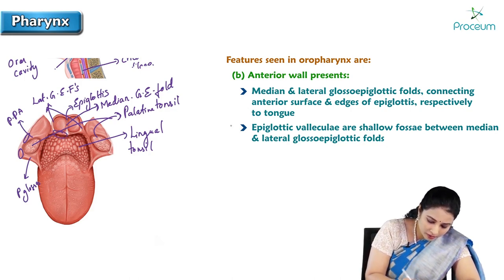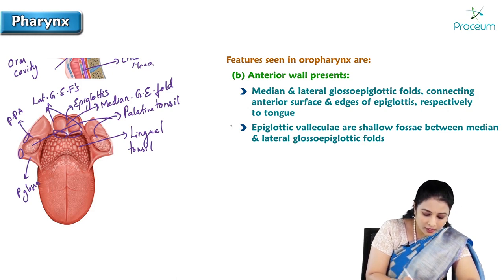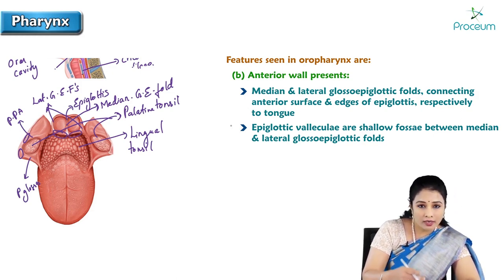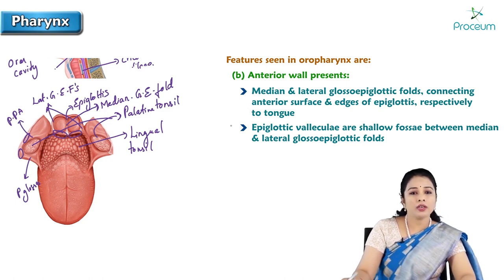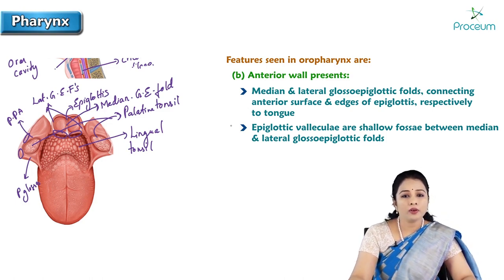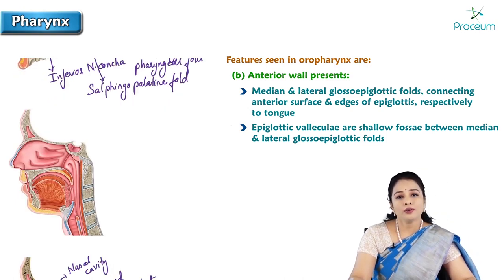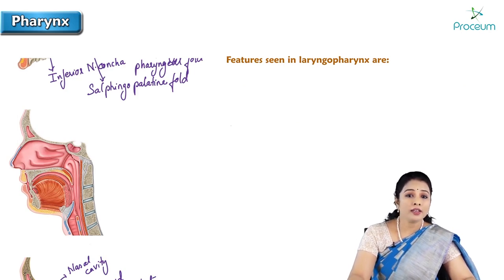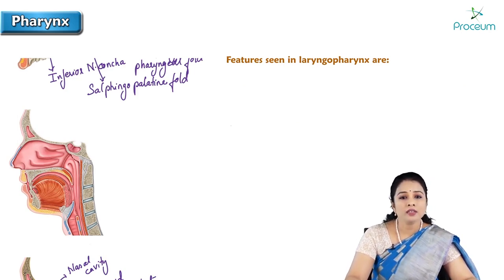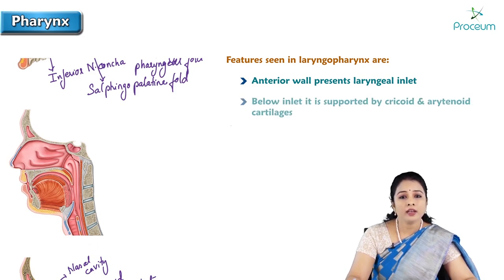The depressions between the median and lateral glossoepiglottic folds, between the tongue and the epiglottis, are called the epiglottic valleculae. Now, features seen in the laryngopharynx: the anterior wall presents the laryngeal inlet, and below the inlet it is supported by the cricoid and arytenoid cartilages.